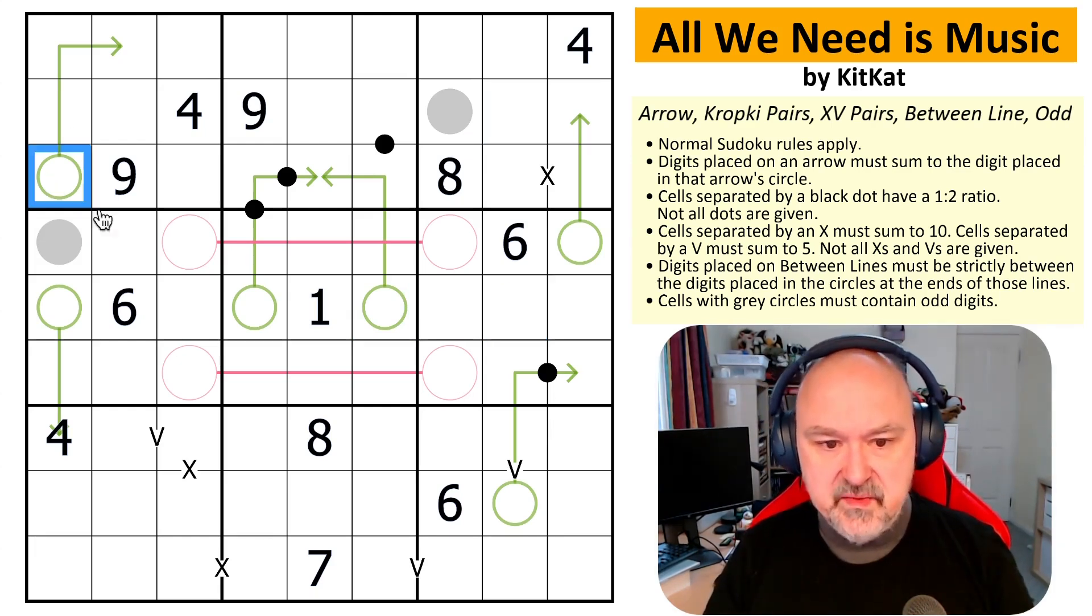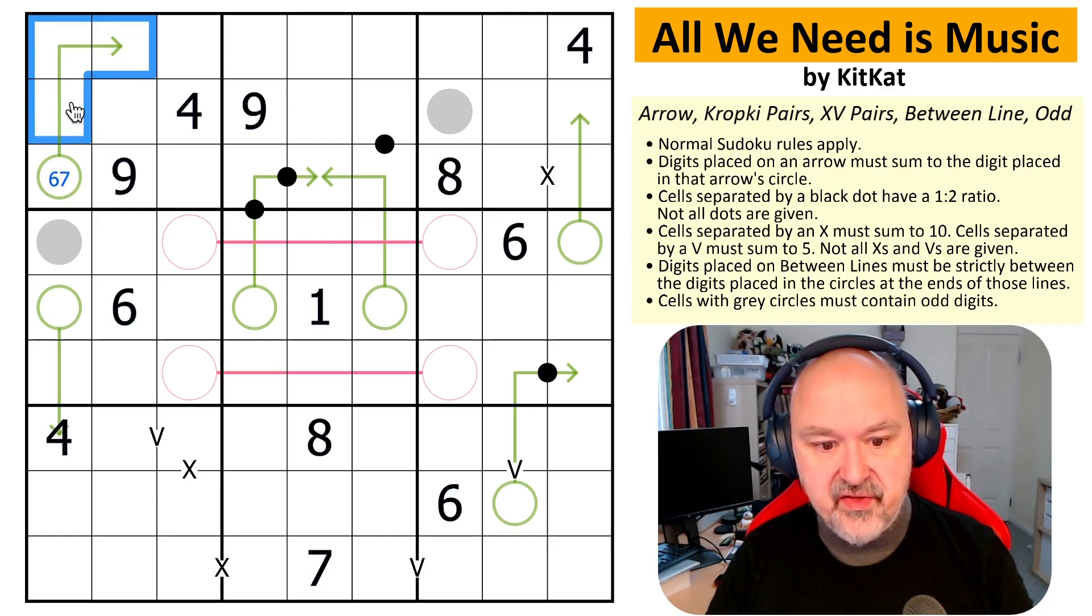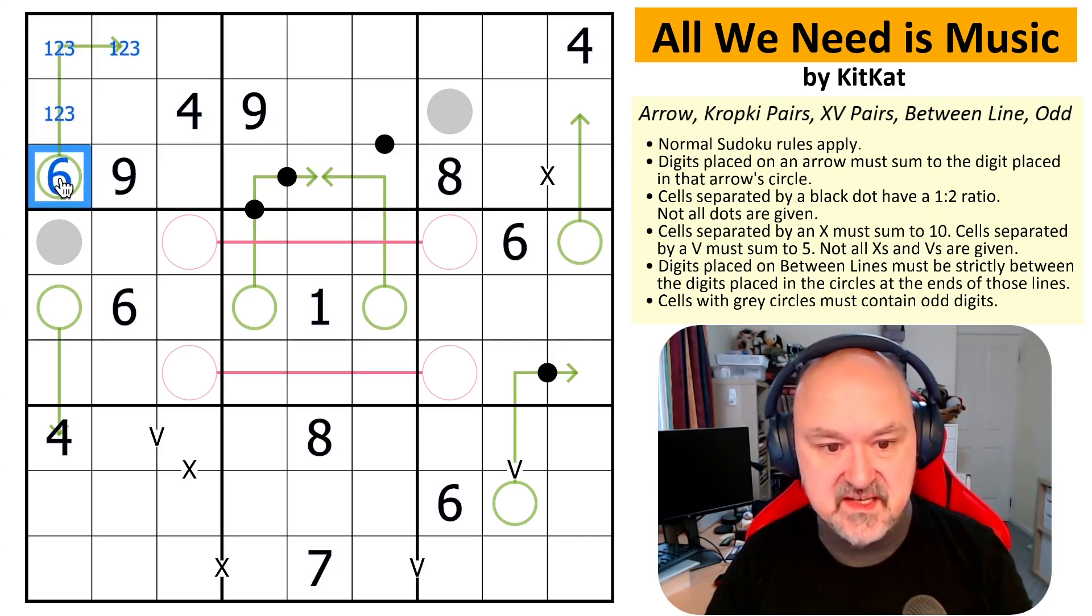The first thing that's jumping out at me is this arrow has to be a 6 or a 7, because there are three cells in the same box that are adding together and the minimum you can do is 1, 2, 3 to 6. However, there is an 8, 9 looking at it. Actually it can't be a 7 because 7 would be 1, 2, 4 and I can't use a 4. So this is 1, 2, 3 and this is a 6.